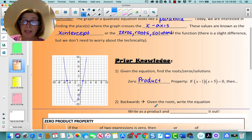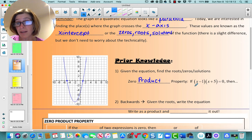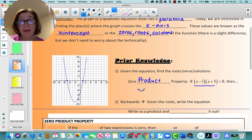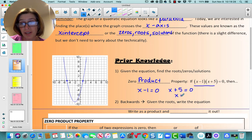The zero product property basically says if you have a quadratic, or actually any polynomial in factored form like this, and it's equal to zero, then you can set each factor equal to zero to find the value that would make the equation true. So you are setting each factor equal to zero and solving. So x equals one and x equals negative five.